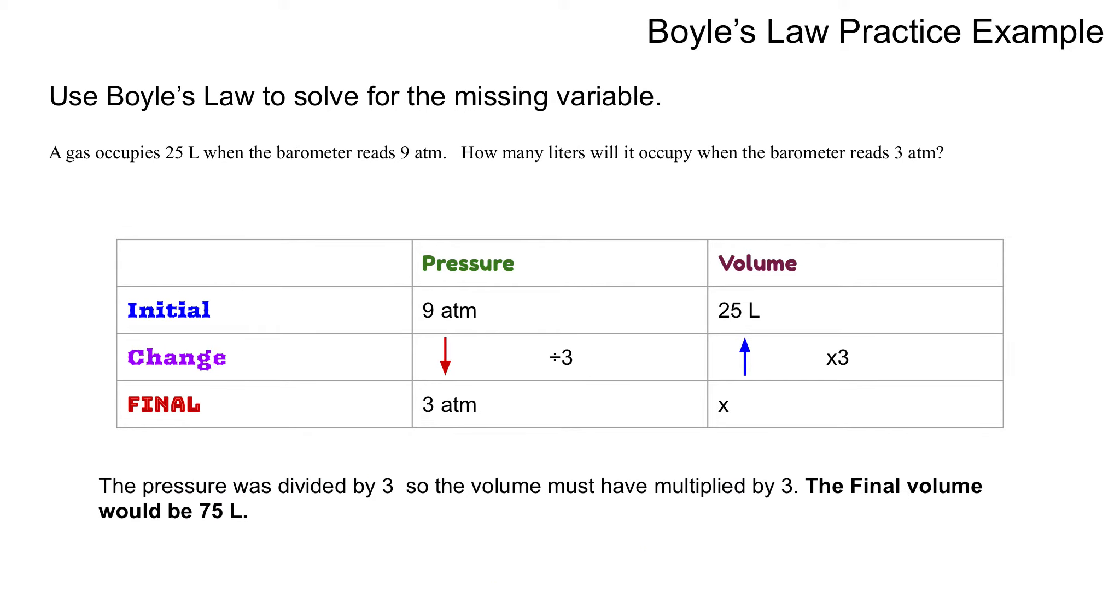Here's another example. A gas occupies 25 liters when a barometer reads 9 atm. How many liters will it occupy when the barometer reads 3 atm? So here, I know that my initial pressure was 9, because that was my initial, and my initial volume was 25.